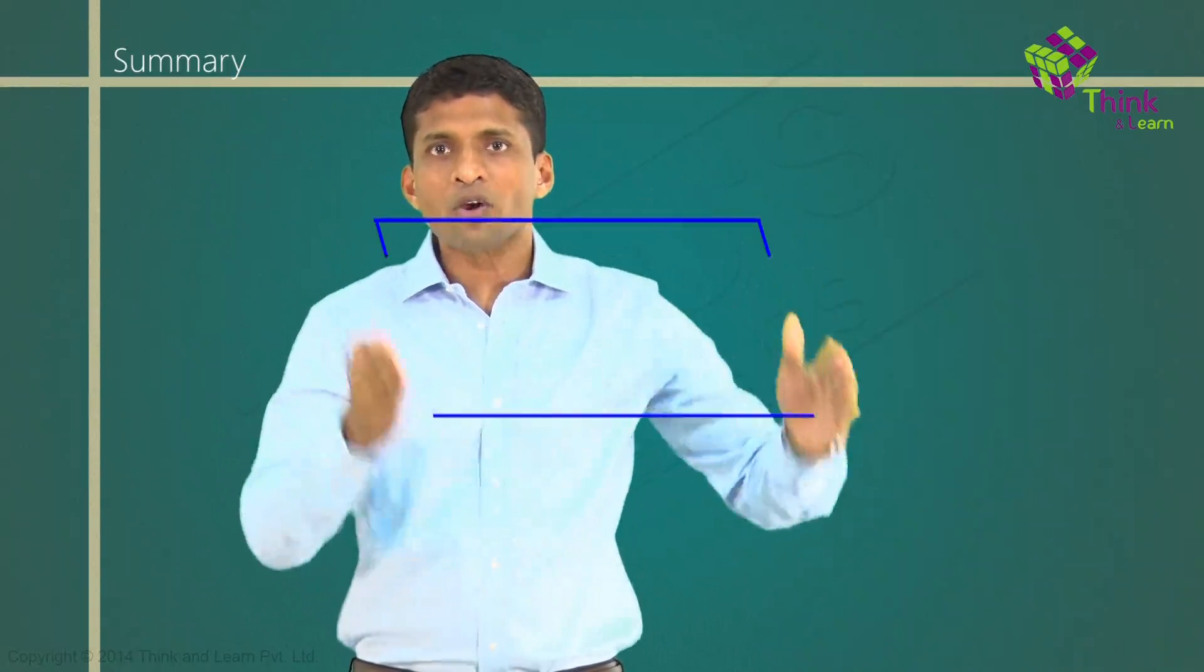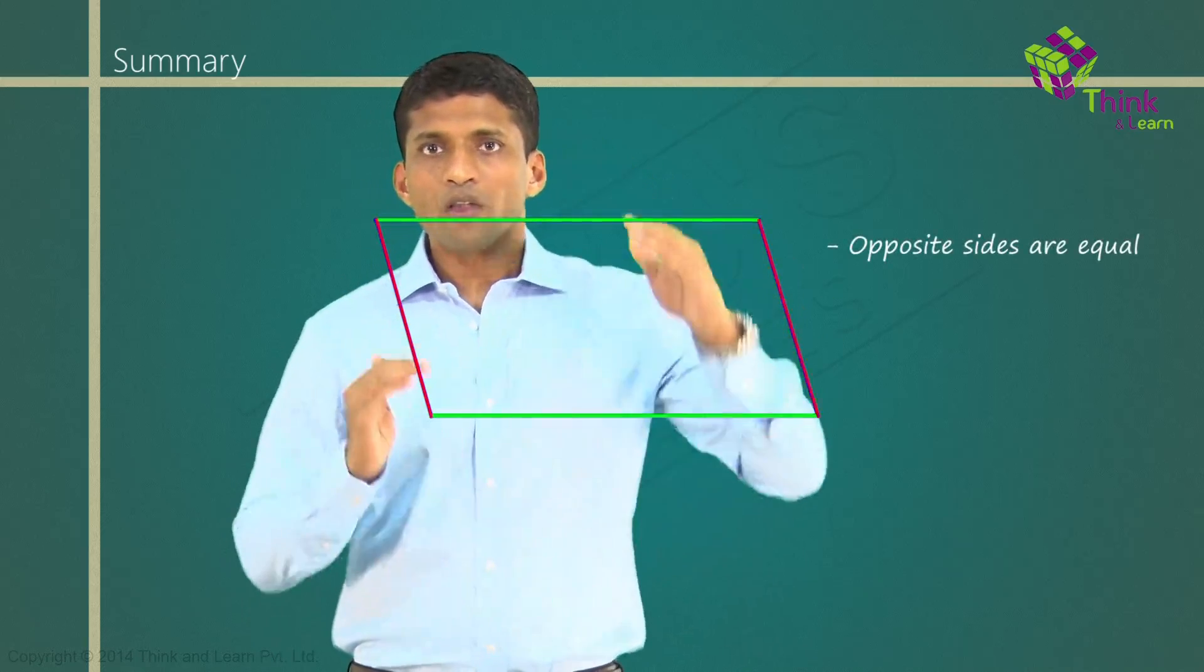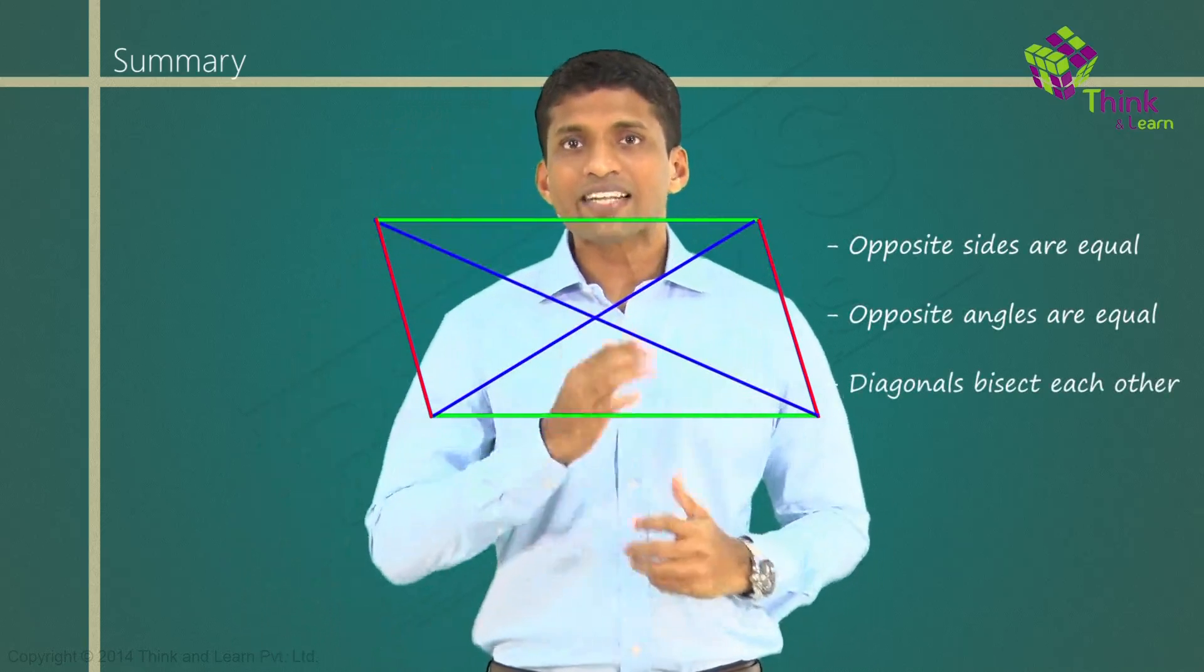So if I start with parallelograms, the important properties are opposite sides are equal, opposite angles are equal, and diagonals bisect each other.